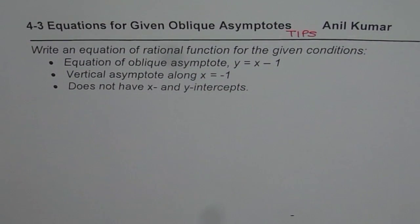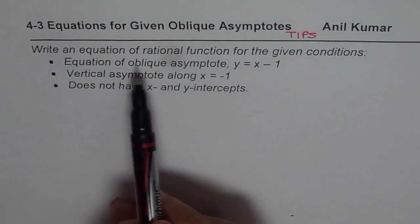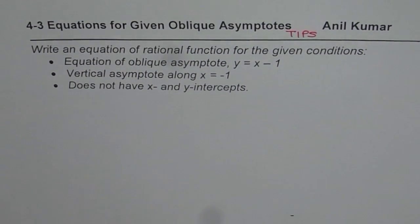The question is: write an equation of rational function for the given conditions. First condition is equation of oblique asymptote is y = x - 1.